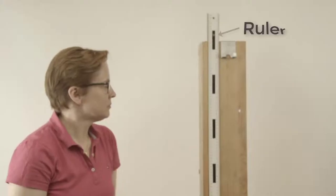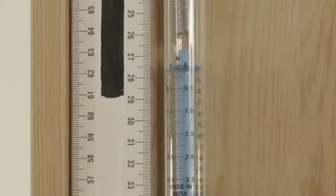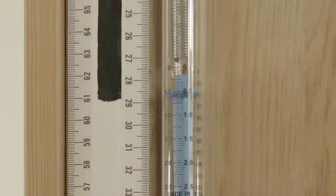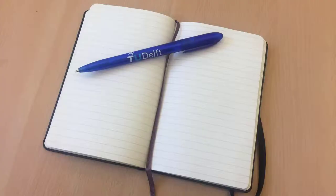There's just one more thing we need, a ruler. You can read out the value for the weight, but since we want to determine if there's a relationship between load and deformation, we'll use the ruler to measure how much the spring elongates under an applied load. And of course, a pen and paper are always useful for writing down our results.